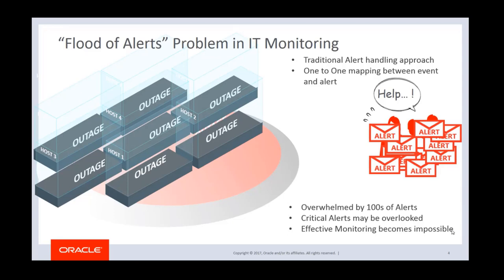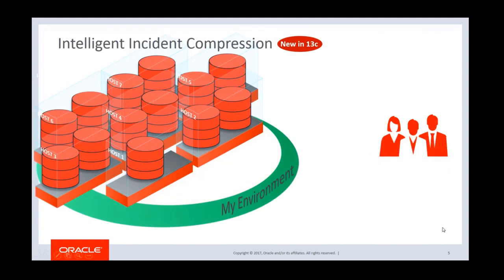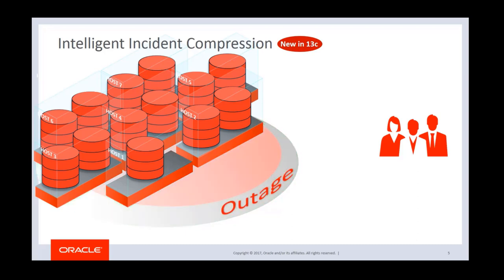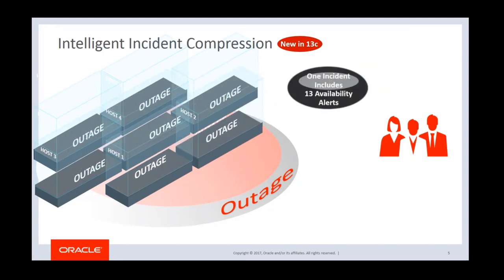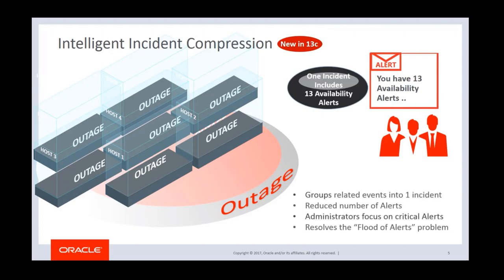So this is a flood of alerts problem in IT monitoring. Because of the massive number of alerts you receive, effective monitoring becomes impossible until the root cause of the outage is fixed. In Enterprise Manager 13c, we introduced the Intelligent Incident Compression feature to particularly address these types of use cases. Using this feature, when a host or multiple hosts or even the entire site goes down, Enterprise Manager groups related events into a single incident, and as a result you can configure to send out only one email notification to administrators. This way you can focus on real issues that truly need your attention.